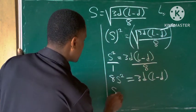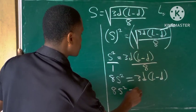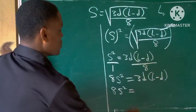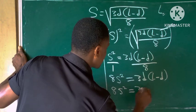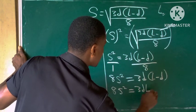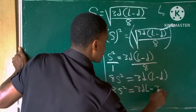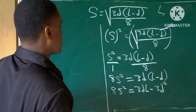So we have 8s squared equals... let's use 3d to multiply both l and d. 3d times l will give us 3dl minus 3d times d will give us 3d squared.